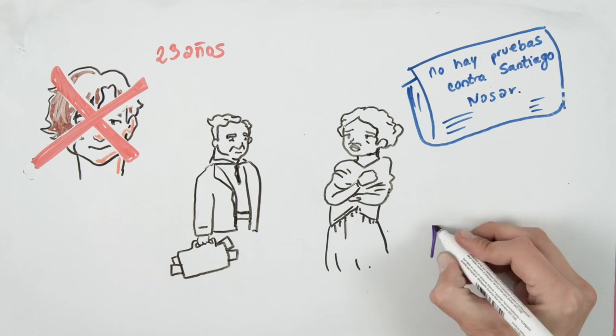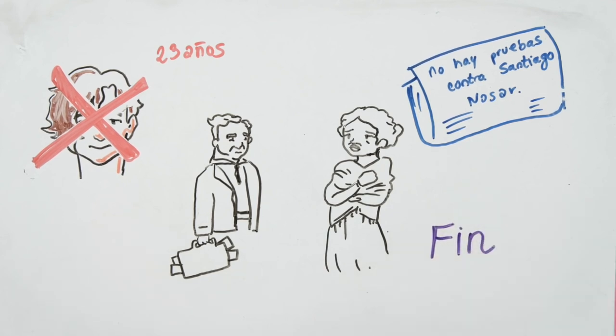And that's it for the summary of Chronicle of a Death Foretold. If you like our summaries, subscribe and comment your favorite work by Gabriel García Márquez. Until the next video.